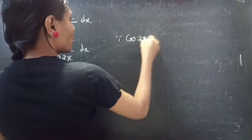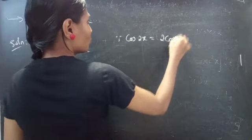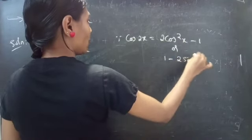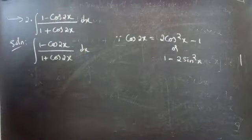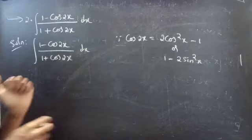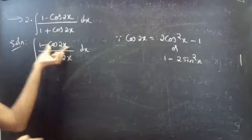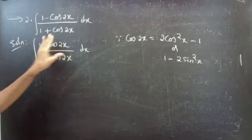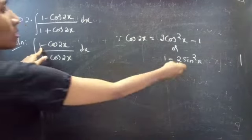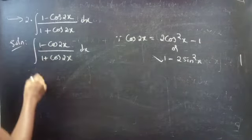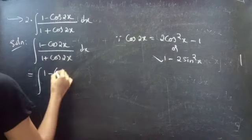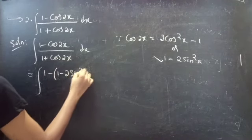Since cos 2x = 2cos²x - 1, or equivalently 1 - 2sin²x, we need to choose the right formula for numerator and denominator. In the numerator we have 1 minus cos 2x, so we use the second formula: replacing cos 2x by 1 - 2sin²x, the 1 and -1 cancel. In the denominator we have 1 plus cos 2x, so we use the first formula: replacing cos 2x by 2cos²x - 1.